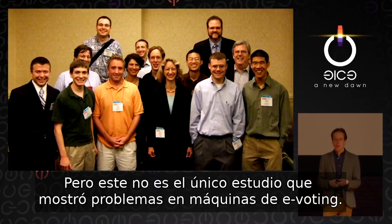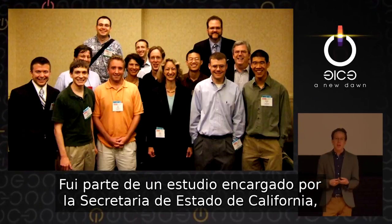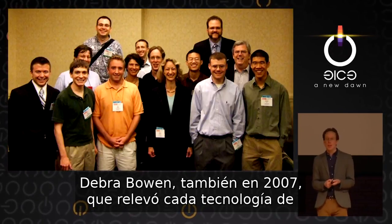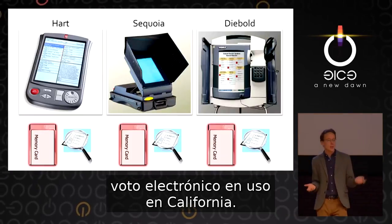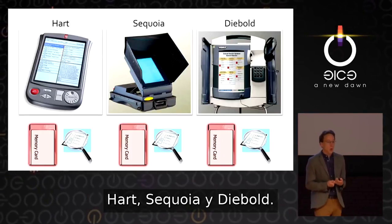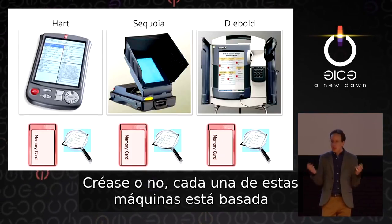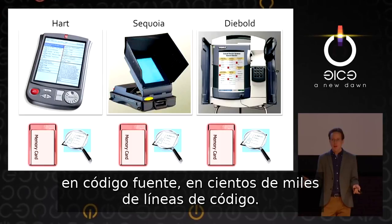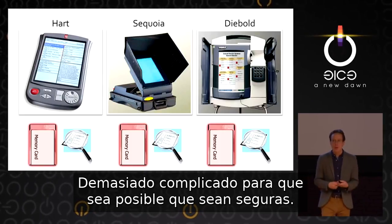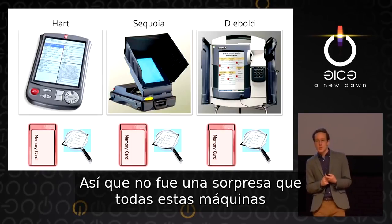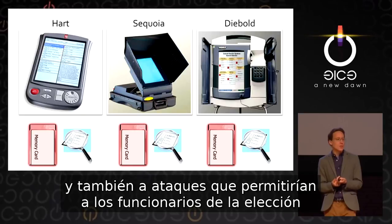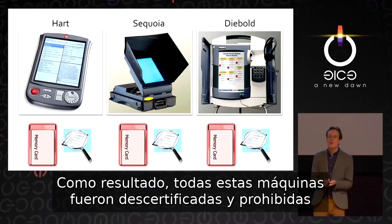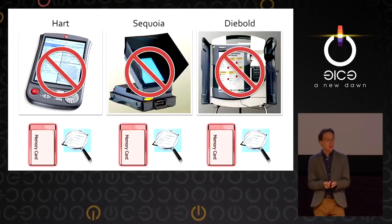I was also part of a study commissioned by California Secretary of State Deborah Bowen in 2007, that reviewed every electronic voting technology in use in California. We studied machines from three manufacturers: Hart, Sequoia, and Diebold. Each of these machines is based on source code in the hundreds of thousands of lines — too complicated to possibly be secure. All of these machines were susceptible to vote-stealing code and to attacks that would let election officials violate the secret ballot. As a result, all were decertified and banned from use in California.